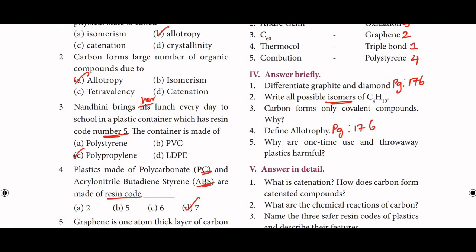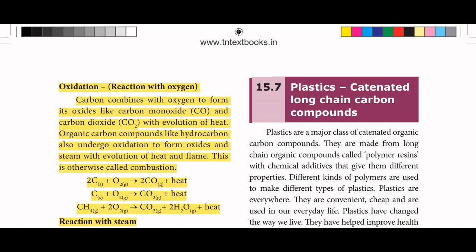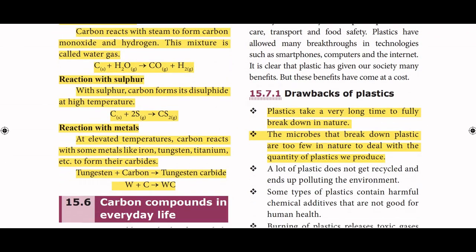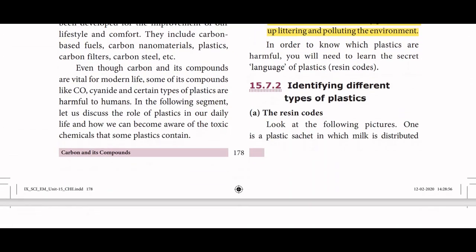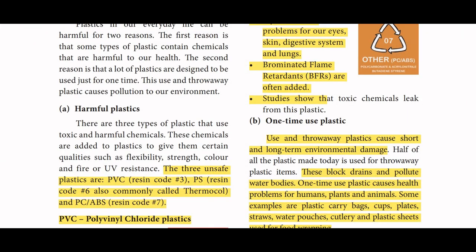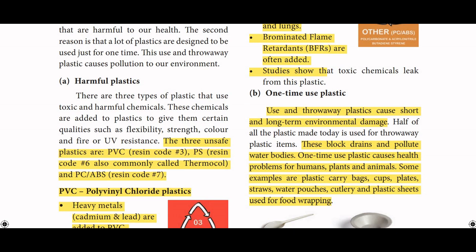Why are one-time use and throw-away plastics harmful? Throw-away plastics cause short and long-term environmental damage. These block drains and pollute water bodies. One-time use plastics cause health problems for humans, plants, and animals. Some examples are plastic carry bags, cups, plates, straws, water pouches, cutlery, and plastic sheets used for food wrapping.